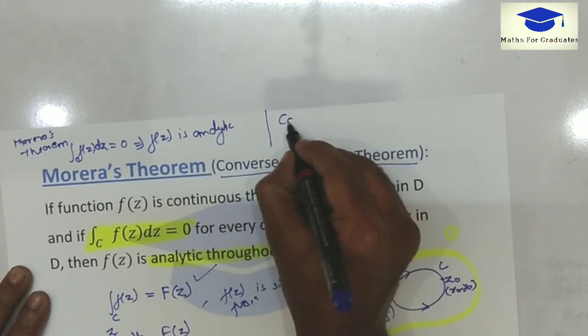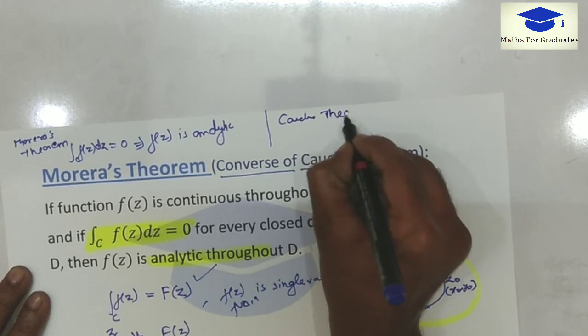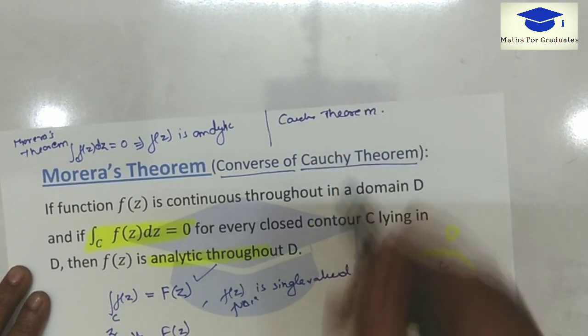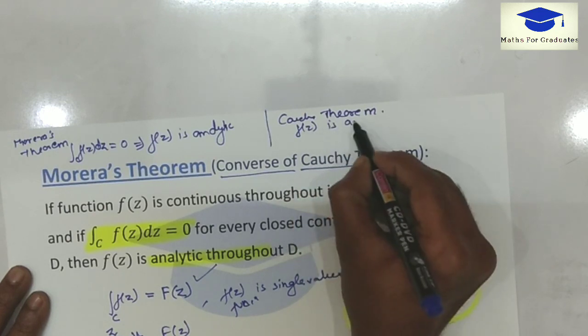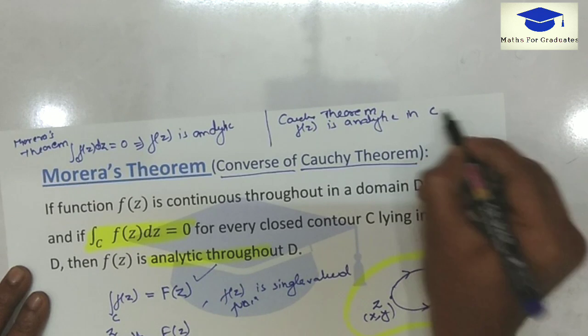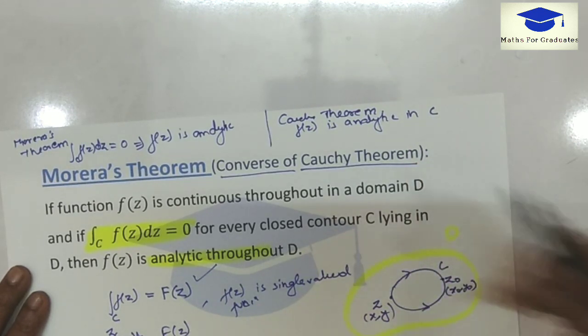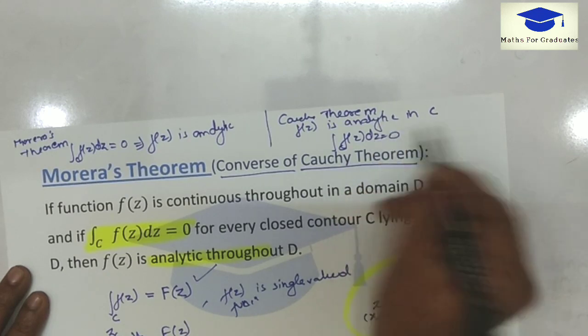While according to Cauchy's theorem, if function f(z) is analytic in C or on C, then their integral is 0. Therefore these two theorems are converse of each other.